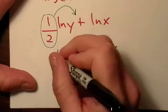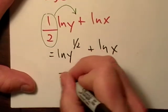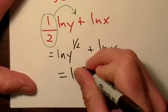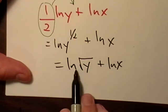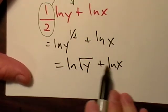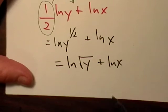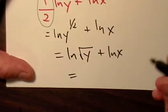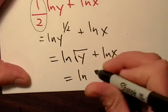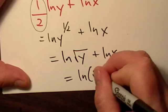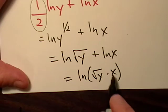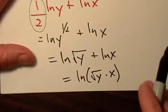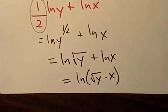Now, what I could also do is I could say natural log of square root of y plus natural log of x. Now, since I have a sum of logs here, a sum of natural logs, I can take it a step further and say natural log of square root of y times x. And the x is not in the radical sign.